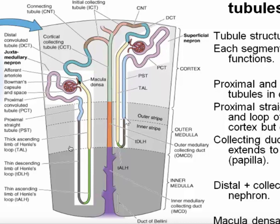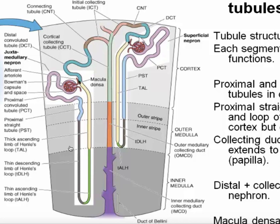As this tubule dives deeper into the medulla, it changes and becomes the descending limb of the loop of Henle. The loop of Henle goes down into the medulla and forms a hairpin turn at various different levels, and then returns back up into the cortex as the thick ascending limb of the loop of Henle. The loop of Henle turns into the distal convoluted tubule back in the cortex. There's a connecting tubule and an initial collecting tubule, but we're going to call all of this the distal convoluted tubule, and eventually it drains into the collecting duct.